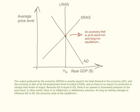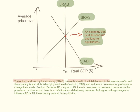If an economy is experiencing both its short-run equilibrium and its long-run equilibrium, all three curves will intersect. When the aggregate demand curve intersects the short-run aggregate supply curve as well as the long-run aggregate supply curve, we say the economy is at both its short-run and long-run equilibrium. The output produced is exactly equal to the total demand in the economy, and the economy is at its full employment level of output. There is no upward or downward pressure on the average price level — no inflationary or deflationary pressure.